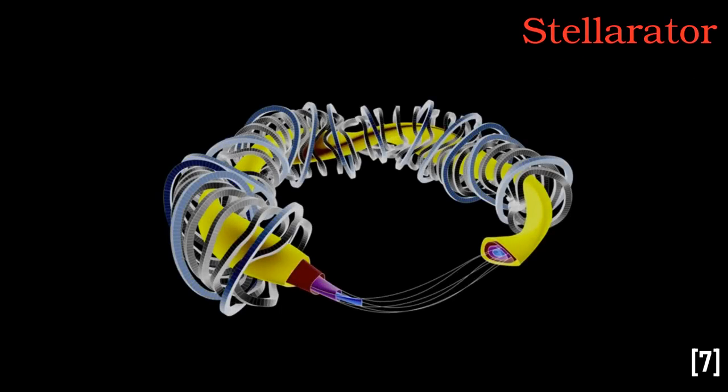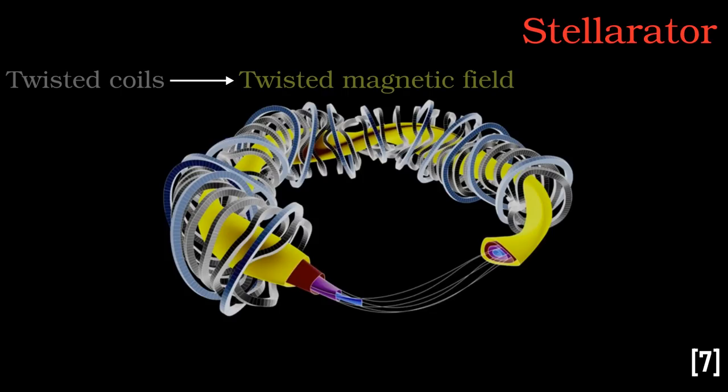The stellarator, which was invented by American Lyman Spitzer to be an artificial star, is more like a Mobius strip. The plasma takes the form of a ribbon, twisted on itself. The magnetic field is shaped by the coils of the machine to wrap back in on itself. Each of the twisted field lines comes closer and then further from the axis of the torus, at the cost of much greater engineering complexity.